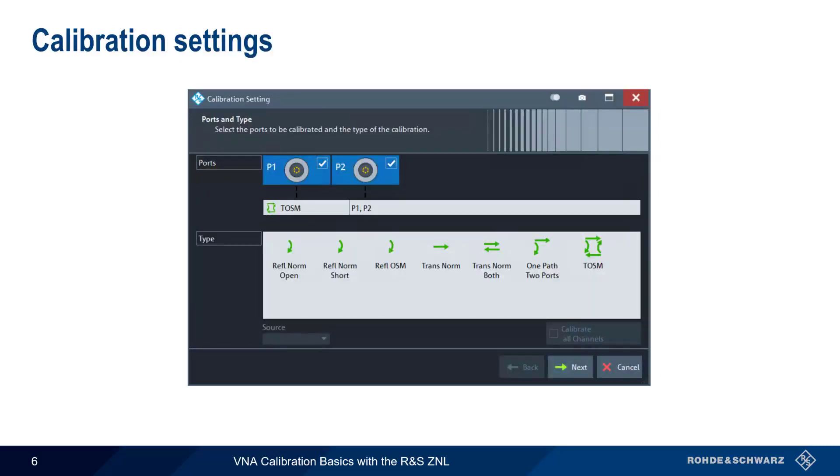In calibration settings, we select the ports we're calibrating: port 1, port 2, or both, as well as the type of calibration that we want to perform.